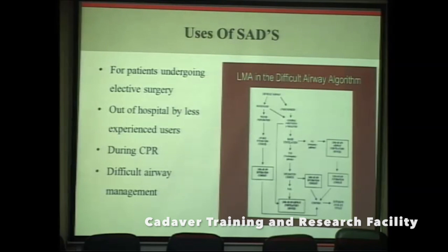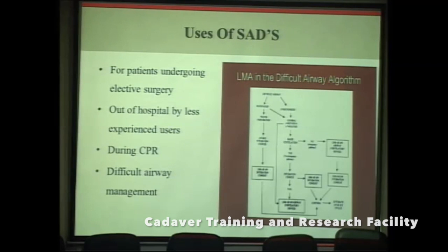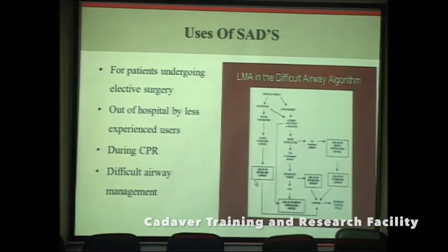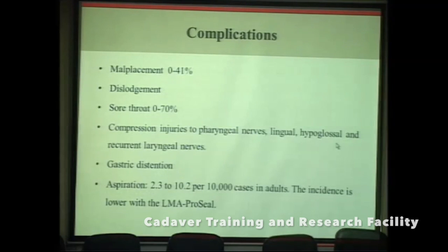The uses of supraglottic airway devices are many. They can be used for patients undergoing short elective minor surgeries, by less experienced or non-anesthesiologist physicians for out-of-hospital airway management, during CPR, and very importantly in difficult airway management. In the difficult airway algorithm, the LMA can be used as a primary airway device, a rescue device, or as a conduit for fiber optic intubation.